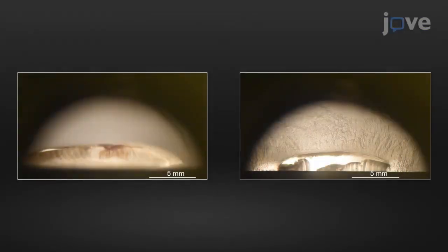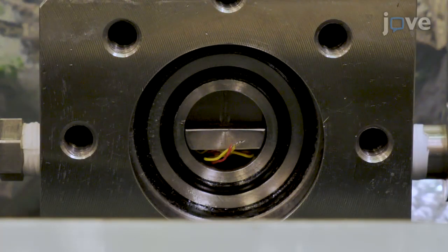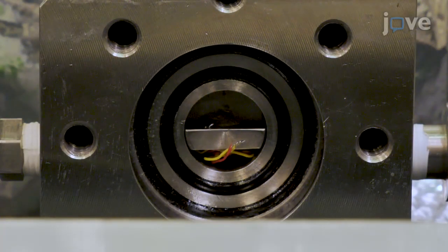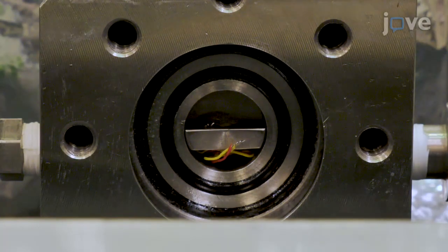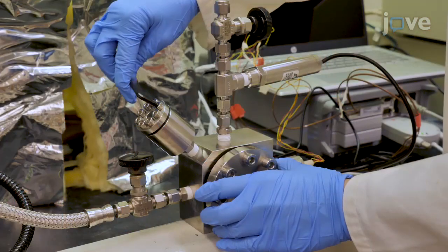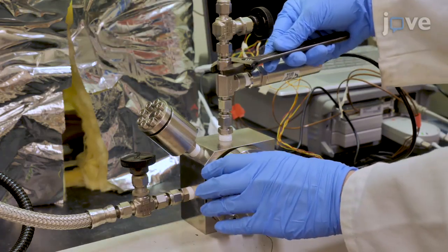The main advantage of this protocol is that one can reproducibly form a hydrate shell on a sessile droplet safely. Leveling the droplet stage is challenging and needs practice as the droplet slides on an uneven stage. Also familiarize with swage lock connections and safety regarding high pressure flammable gases.